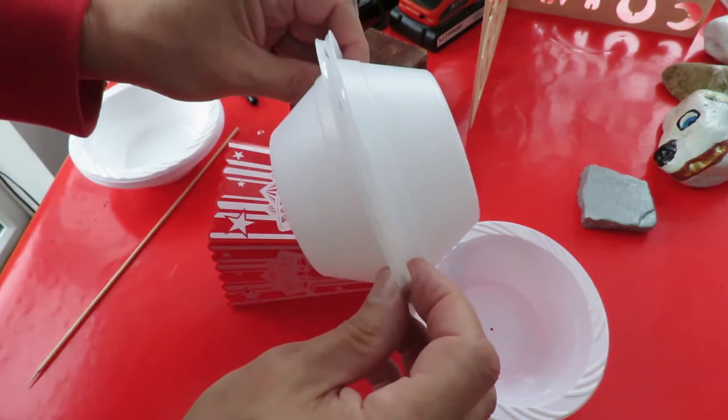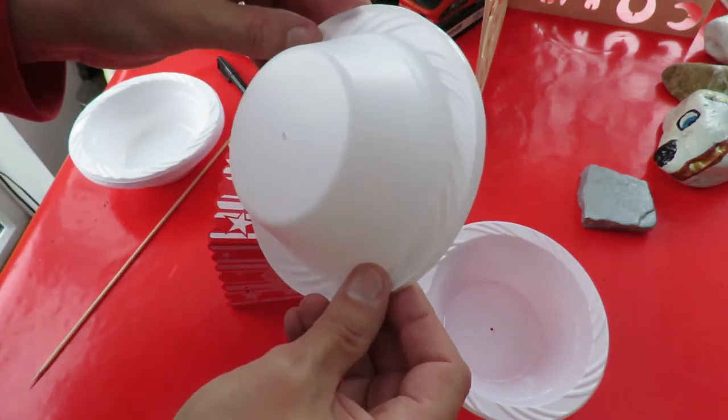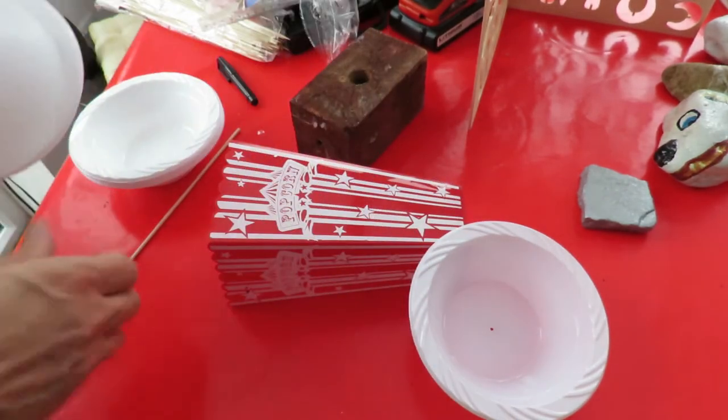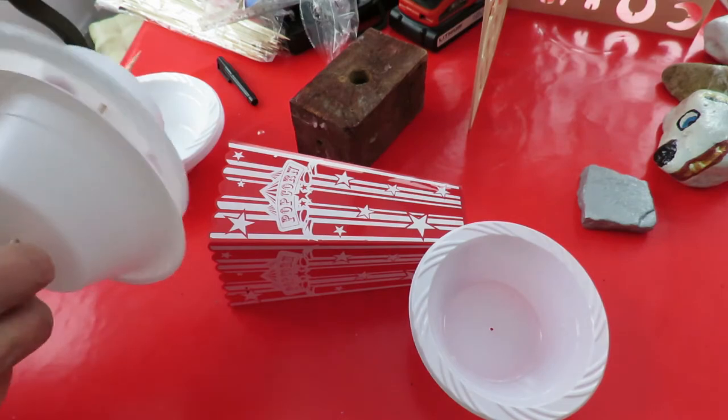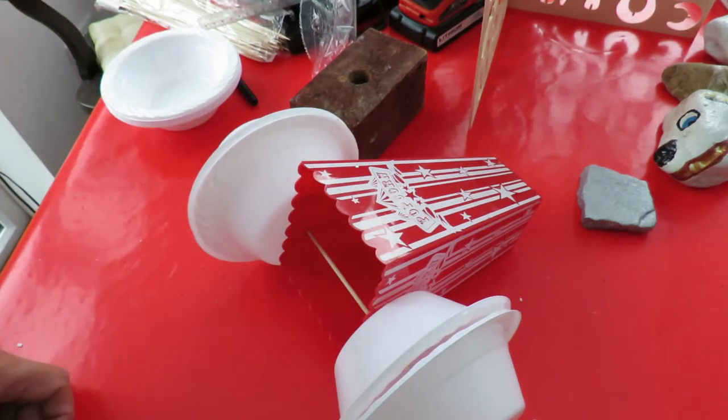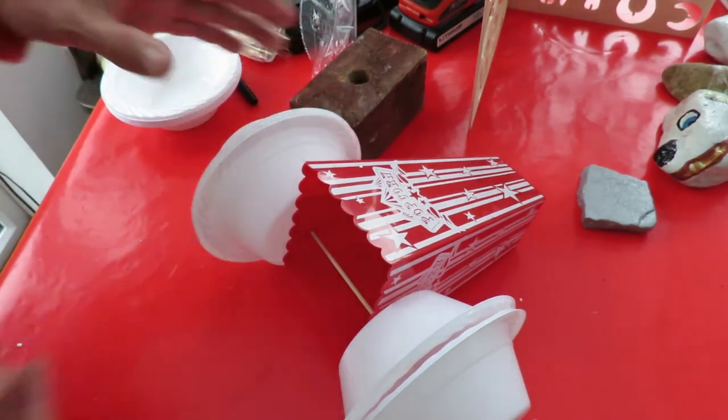That's what I want to do. Stick them together like that. Now I could glue them. What I'm going to try and do is just tape them. Right, I'm going to wrap some tape round there to hold them tight.